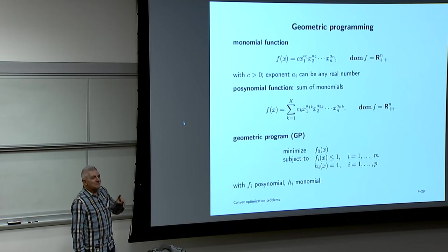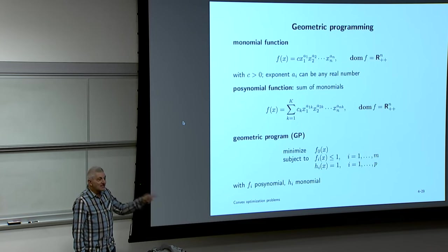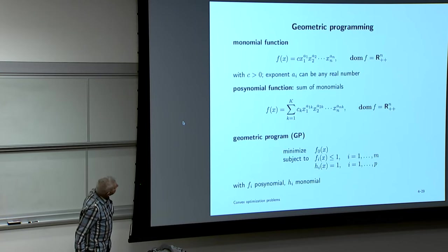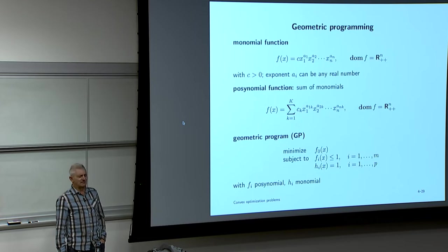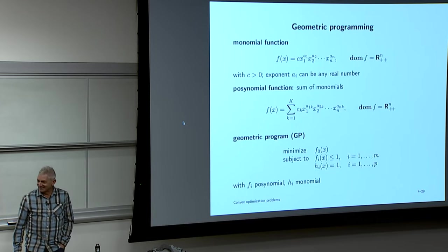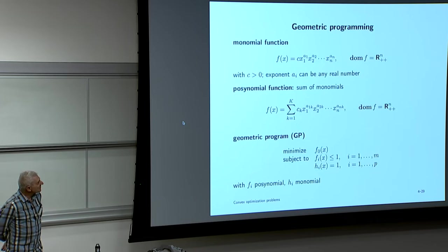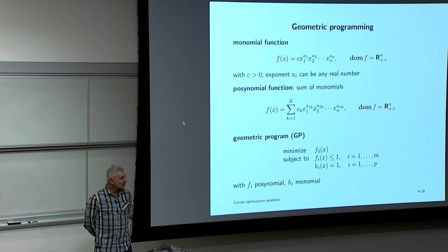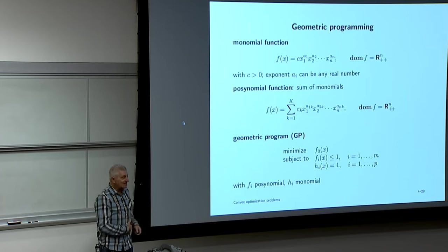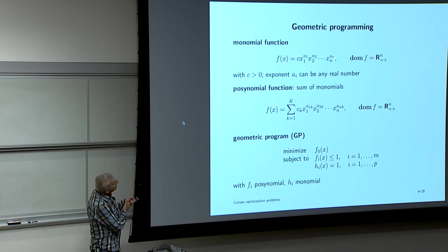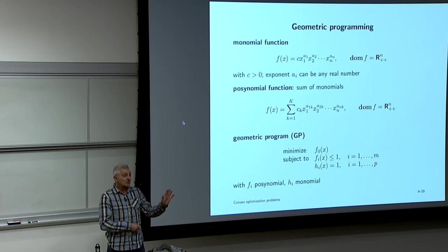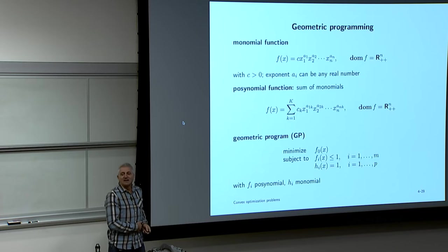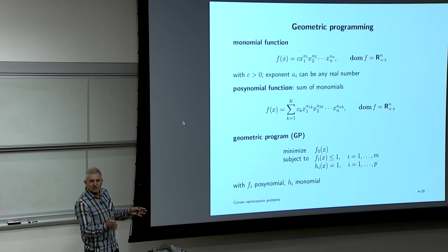Geometric programming has its own language. A monomial is a product of positive variables raised to arbitrary real-number powers — like x₁^{a₁} x₂^{a₂} … x_n^{a_n} where the exponents can be −1.3, +2.6, etc. In many engineering fields this appears as a scaling law.